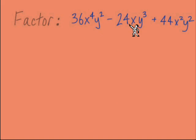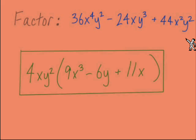Here's one more for you to try — one that has both x's and y's and three terms. Pause the video and take a few minutes to work it out, then come back for the answer. The answer is 4xy squared times the quantity 9x cubed minus 6y plus 11x.